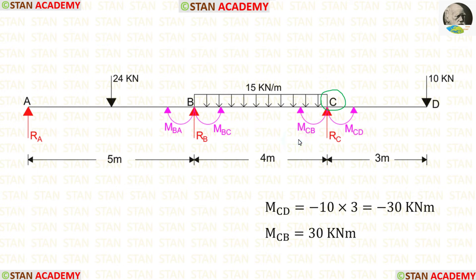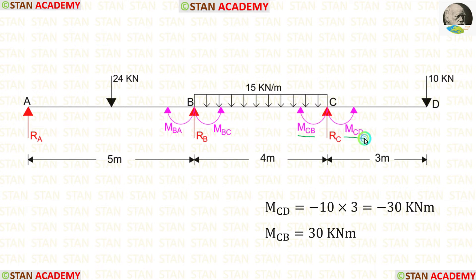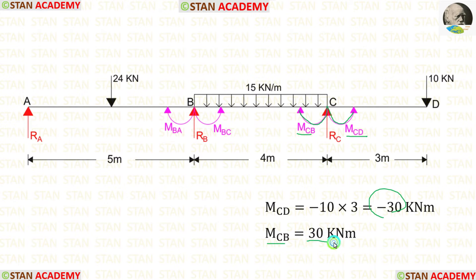At joint C, we can easily calculate the final moments. First, let us find MCD. To find MCD, we multiply the point load of 10 kN by the overhanging distance of 3 meters, giving us 30. MCD is acting in the anti-clockwise direction, so we apply a negative sign, giving a negative moment. The values of MCB and MCD will be the same but with different signs. MCD is negative because it acts anti-clockwise; MCB is positive because it acts clockwise. So MCB equals positive 30 kN·m.